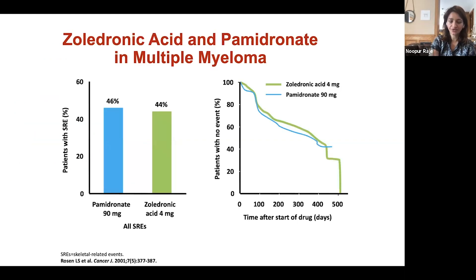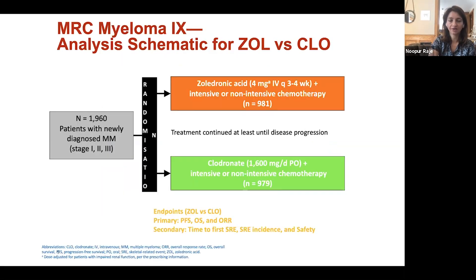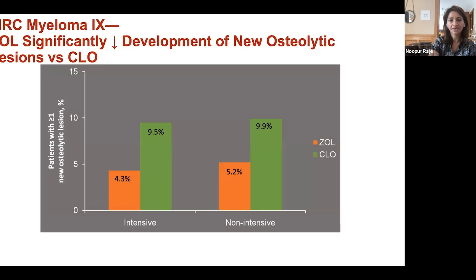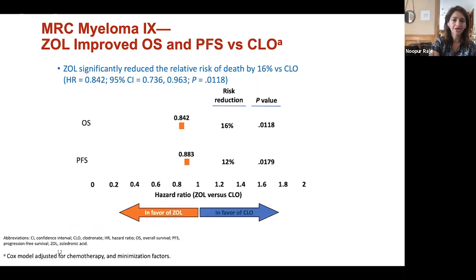Studies have shown the use of bisphosphonates — you can use either pamidronate or zoledronic acid; both are equally efficacious and can decrease the incidence of skeletal problems by about 50%. A new study from the UK MRC trial compared zoledronic acid to clodronate, showing something quite important: whether or not you have bony lesions, if you're getting active treatment for myeloma, you should be treated with a bone-targeted agent because it has been shown to decrease the development of new osteolytic disease.